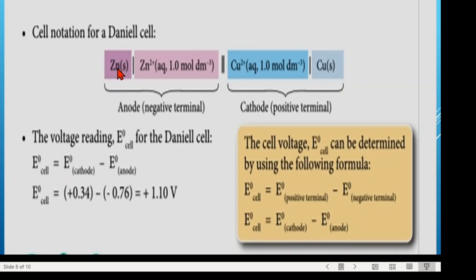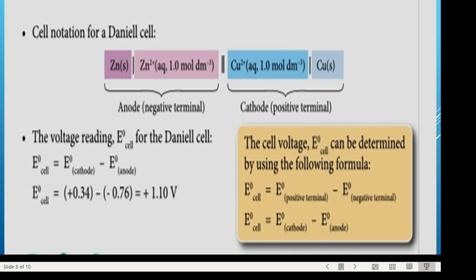For the Daniel cell, we write the cell notation as: Zn | Zn²⁺(aq, 1 mol/L) || Cu²⁺(aq, 1 mol/L) | Cu. Zinc is the anode on the left, then its electrolyte solution Zn²⁺(aq), then a double line representing the salt bridge or porous pot, then the cathode electrolyte Cu²⁺(aq), and finally the copper electrode on the right.